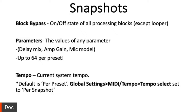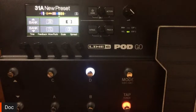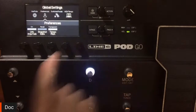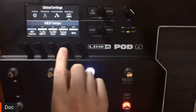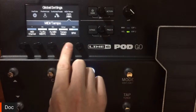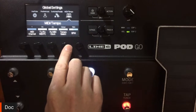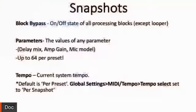The final thing that can change with snapshots is going to be the tempo — the current system tempo. This might mean whether you're syncing up to a song and each snapshot is a different song, or you want different delay times. The default is per preset, and that's where we can head into global settings, MIDI tempo, and set it to per snapshot. From my PodGo edit screen, hitting page left and right at the same time, then knob five to access global settings. Scrolling to MIDI tempo, on knob four we can select whether our tempo is controlled globally, per preset, or per snapshot.